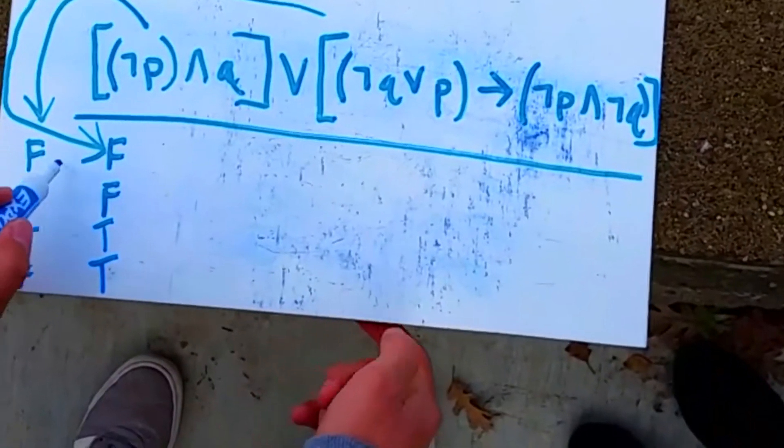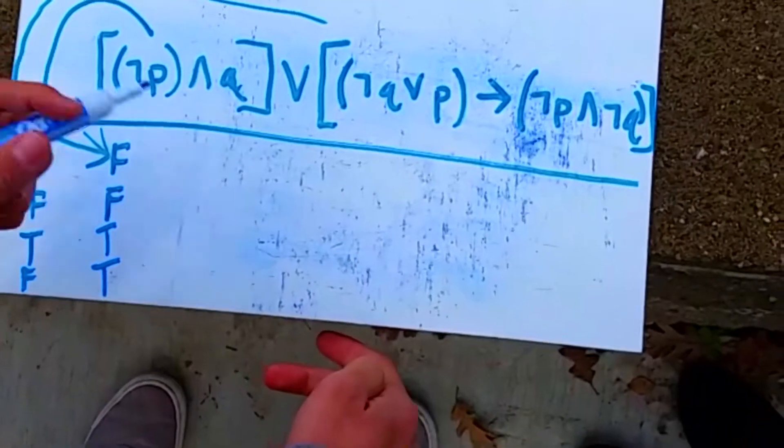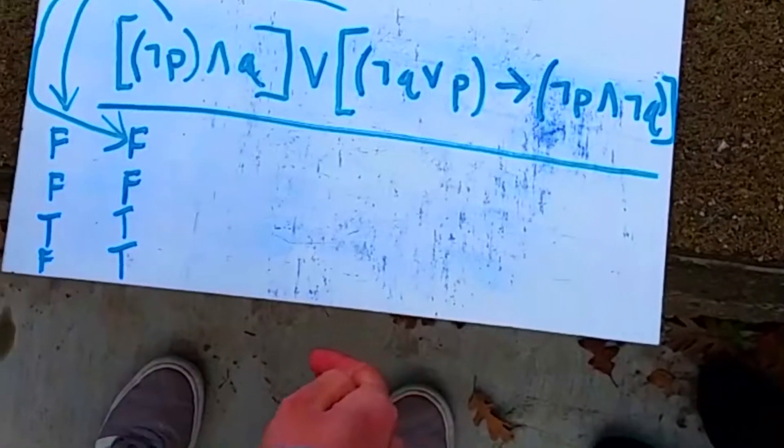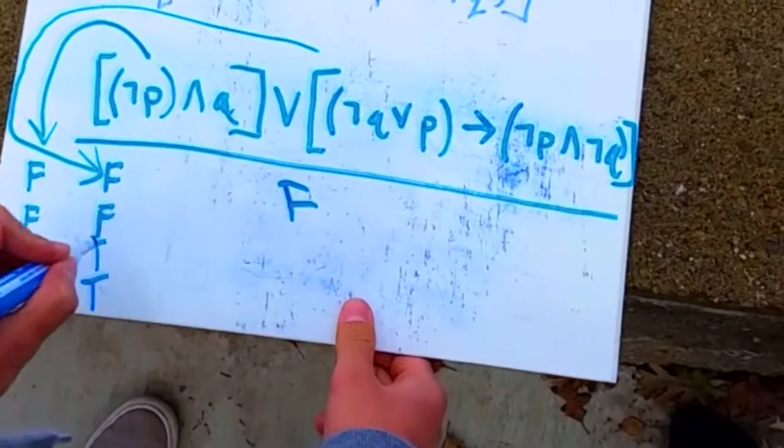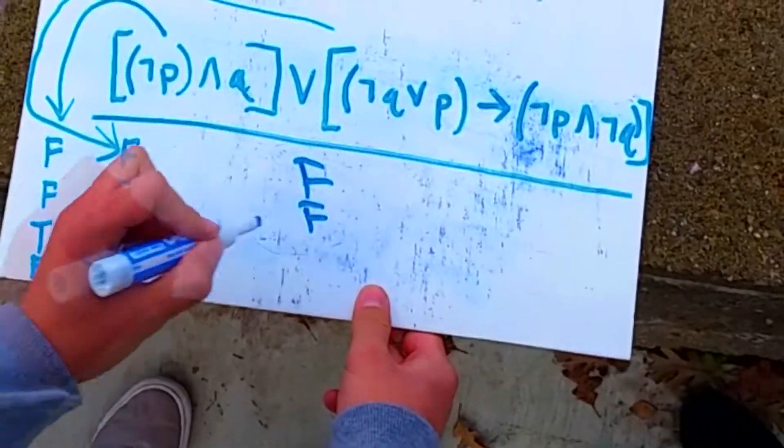This is a complex logic problem. P equals John works at a pizza factory. Q equals John has two dogs. Put this into two separate truth tables and create one big one.